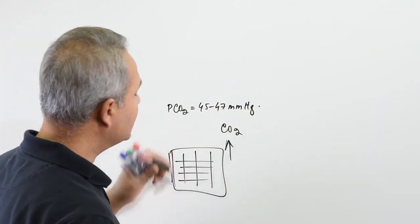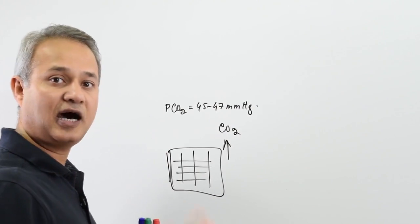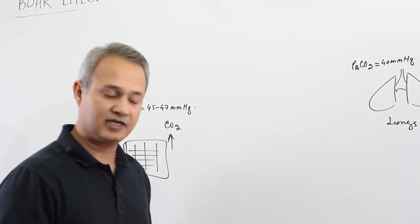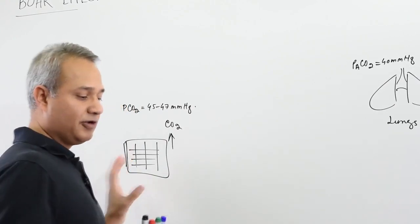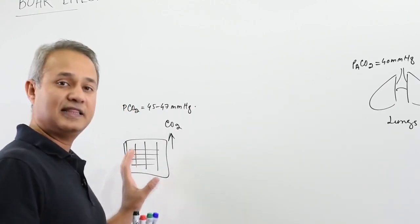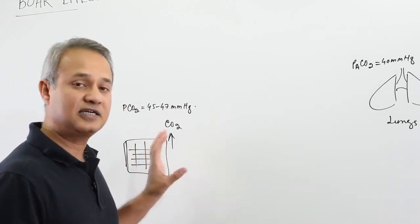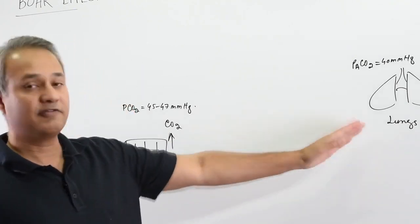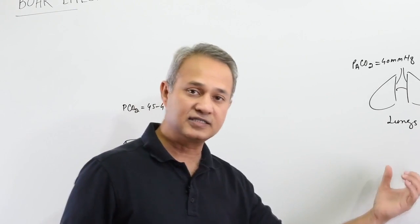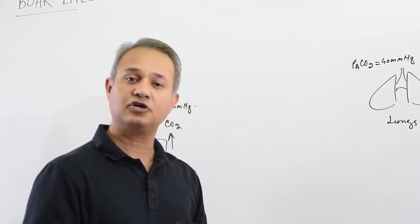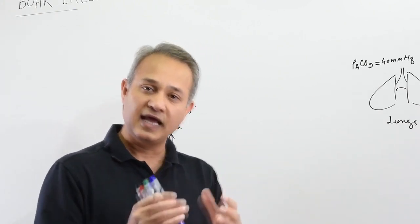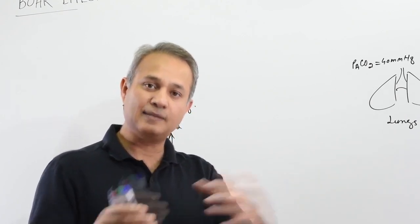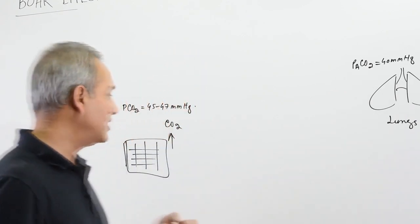This increased CO2 pressure helps unload oxygen. Remember: there is a Bohr effect and a Haldane effect. The Bohr effect is the observation that increased carbon dioxide concentration helps unload oxygen. The Haldane effect is the opposite — on the lung side, increased pressure of oxygen helps unload carbon dioxide. So they both help each other to be unloaded.